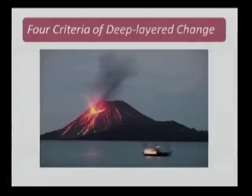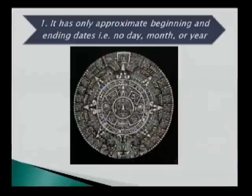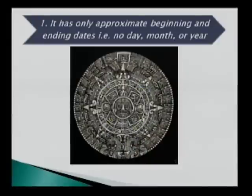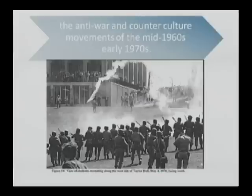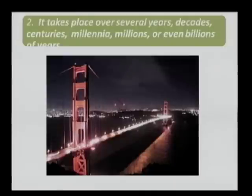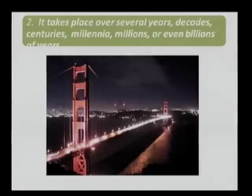So, how do these examples express deep layer change? Well, number one, you'll notice that they all have only approximate beginning and ending dates — that is, there is no specific day, month, or year for them. The only time ranges referenced are done with phrases such as first half of the 19th century or mid-1960s, early 1970s. The second criteria of deep layer change is that it takes place over either several years, decades, centuries, millennia, millions, or even billions of years.